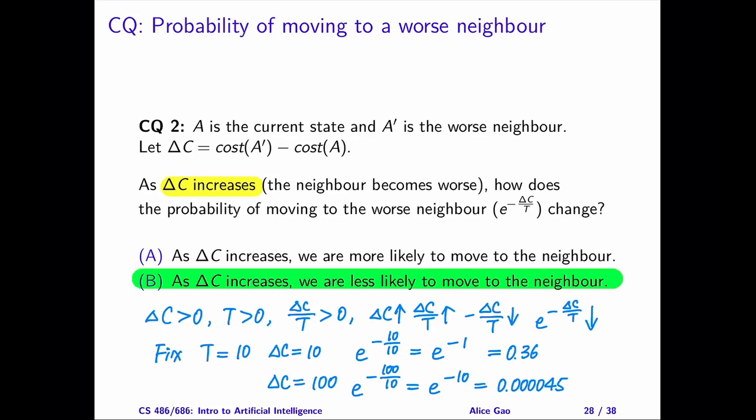Here's the takeaway from these two questions. Moving to a worse neighbor is a risky move — it is a type of exploration. Therefore, as the temperature decreases and as the neighbor becomes worse, we want to explore less. So we want this probability to decrease.